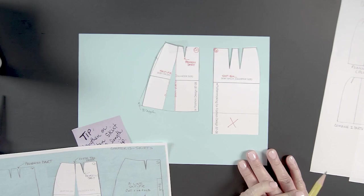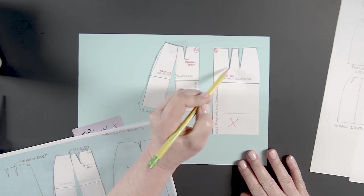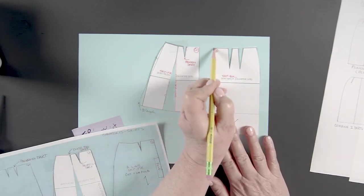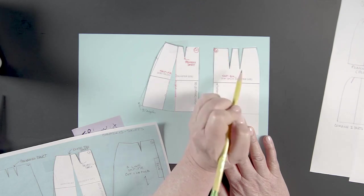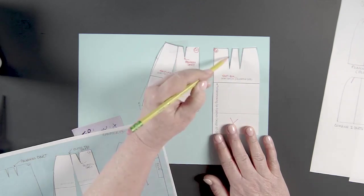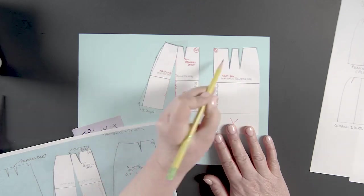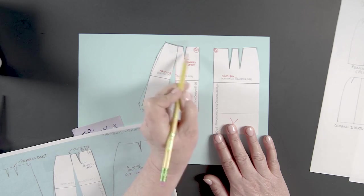So now this becomes the princess dart. Why? Because this measurement from here to here is exactly the measurement to the princess seam line. So this is the one we want to use.